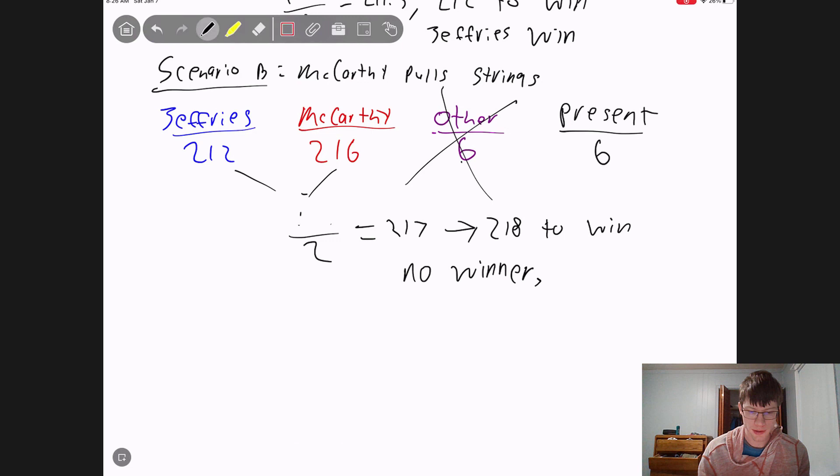So now he only needs 428 divided by 2 is 214. This is 214 right here. So that means that 215 were needed to win, and he got 216.